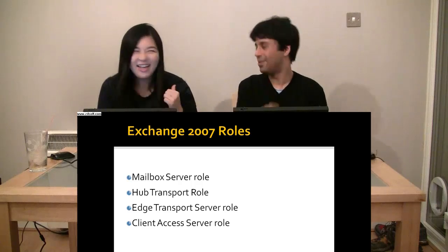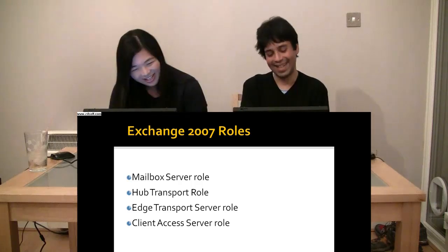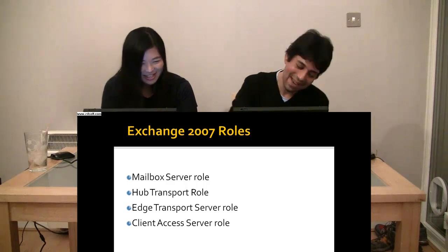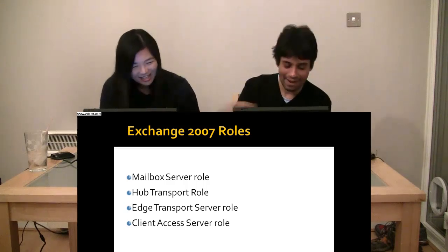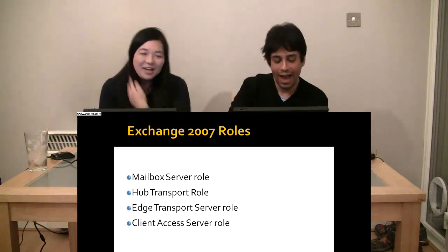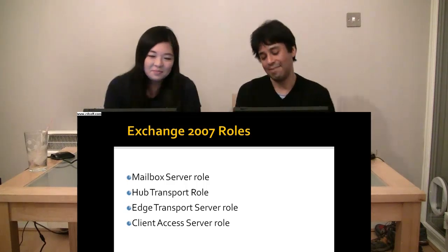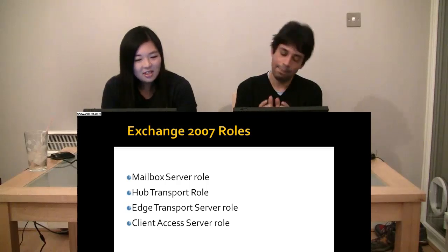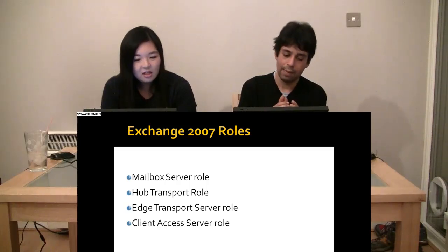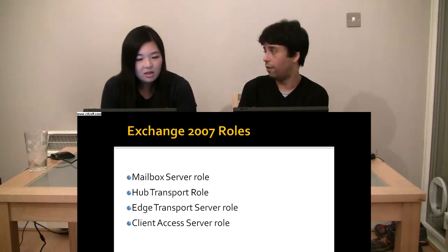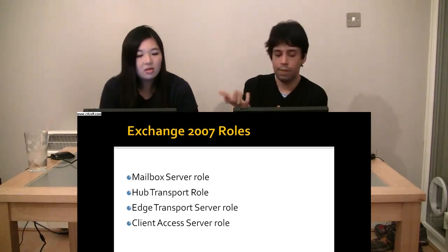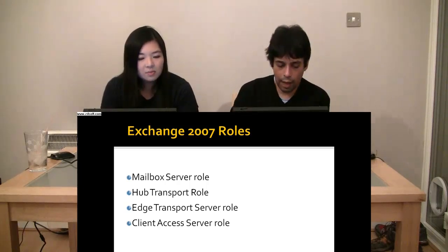With the exception of the edge transport server role, all the roles can be installed on one server. The edge transport server role — if you've only got one thing, one server receiving all the inbound email, you just have two of them, easy. MX records — you just have two of them, and you can balance between them by giving the same weight.